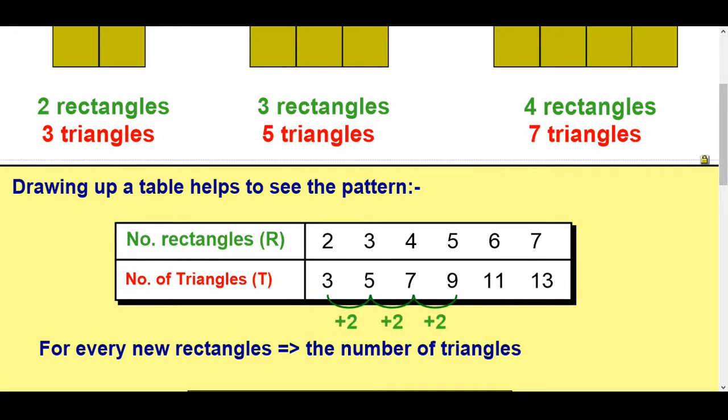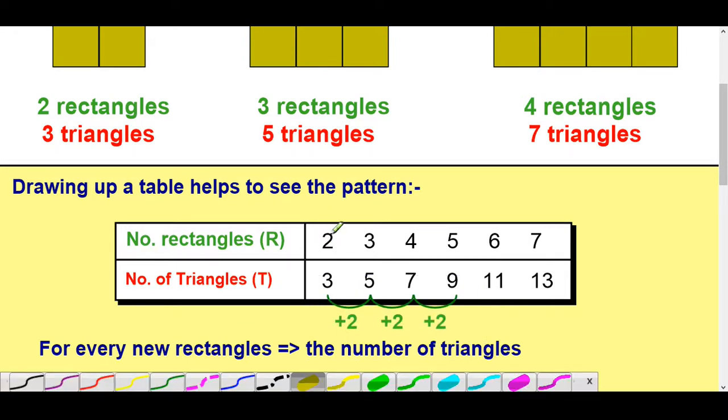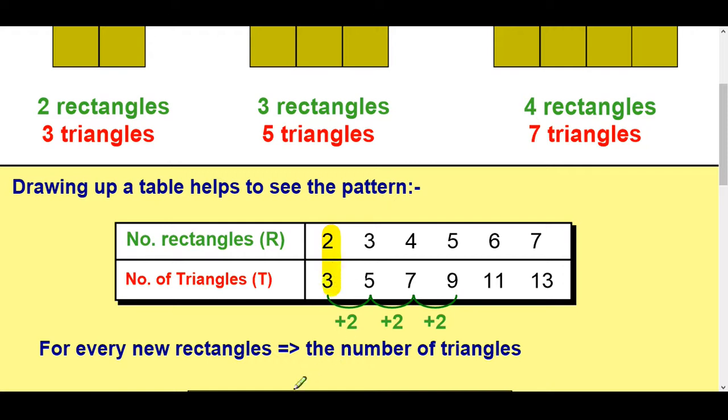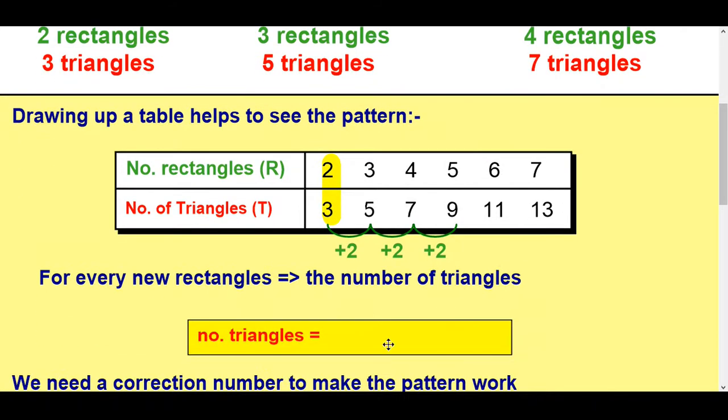So we know it's going up in twos. So that means that in order to get from the top to the bottom, if it was a simpler pattern, I would normally multiply by two first. So I would normally do that, multiply by two. But again, that doesn't work.